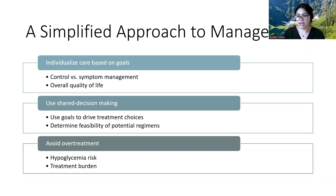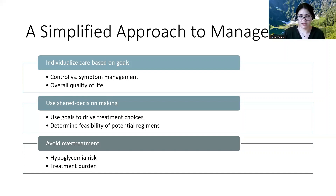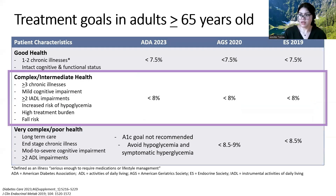Using shared decision-making and getting their buy-in helps tailor which medications I might be thinking of, and learning from patients about their day-to-day tells me how feasible some of these medications are going to be. The third pillar is just avoiding over-treatment — hypoglycemia becomes very dangerous especially in our population and leads to a whole bunch of negative consequences. I also want to avoid treatment burden. Some folks need four or five drugs just to control symptoms, so looking overall at the medication list and how much these medications contribute to polypharmacy is something to keep in mind as a framework.